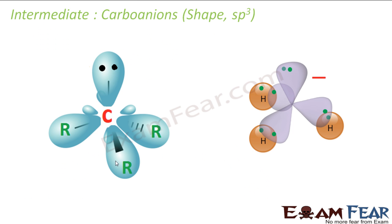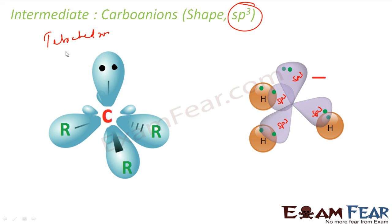Let's talk about the shape of a carbanion. Please note: carbocations were sp2, but carbanions are sp3 hybridized, giving a tetrahedral shape. Three of the sp3 orbitals are bonded with an alkyl group or hydrogen, and one sp3 hybrid orbital is free, containing two electrons — one lone pair.